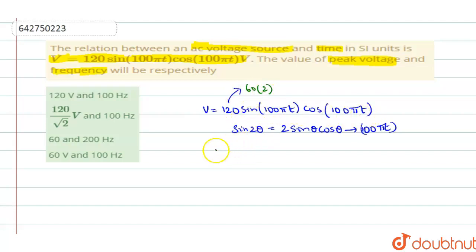This equation can be rewritten as V equals 60 into sine of 2θ. So 2 times 100πT is 200π into T. Now this equation has been reduced to the general equation, equation of the general form.